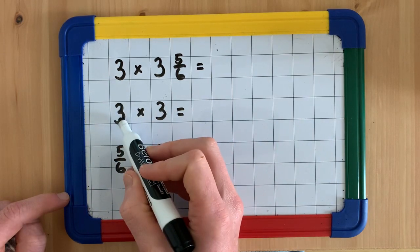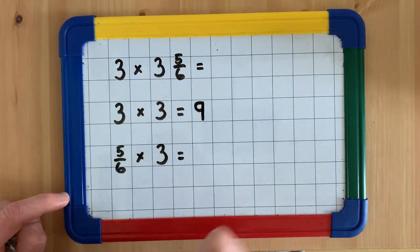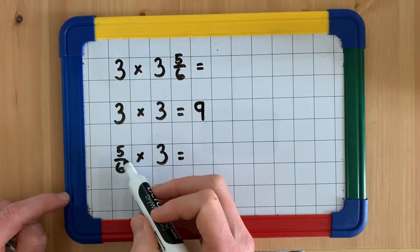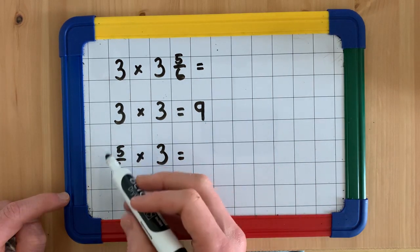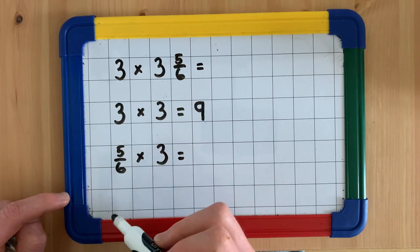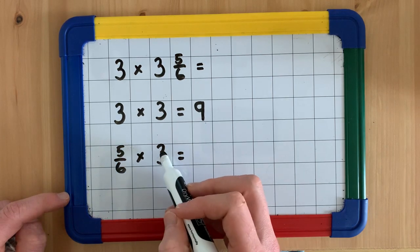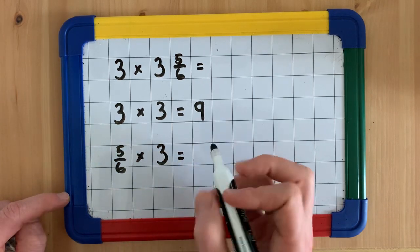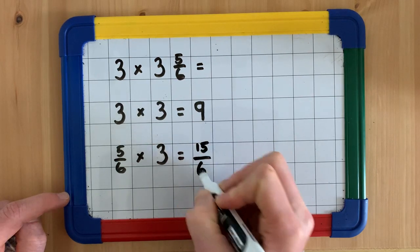So here we have 3 times 3, that makes 9. And then we've got 5/6 times 3. When we're multiplying a fraction by an integer, we just multiply the numerator. So here we have 5 times 3, that makes 15/6.